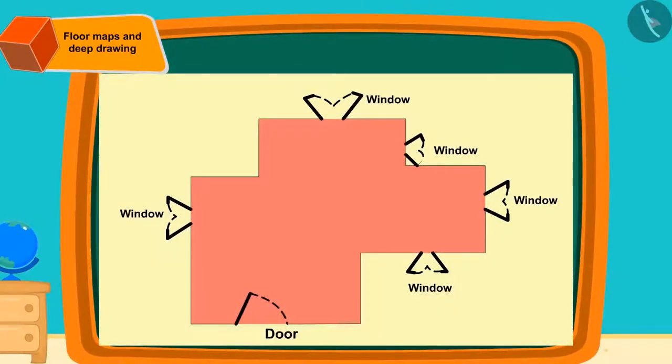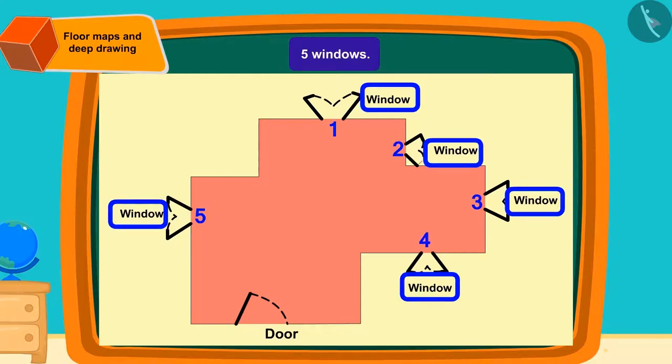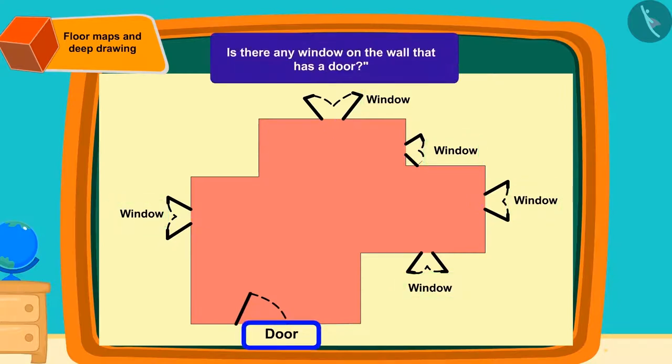Can you tell by looking at the map of the floor how many windows are there? Yes, the floor map has five windows. Is there any window on the wall that has a door? Exactly, there is no window in the wall where the door is.